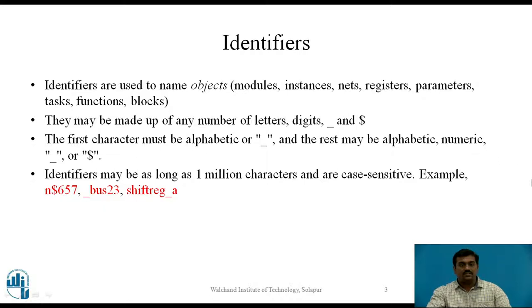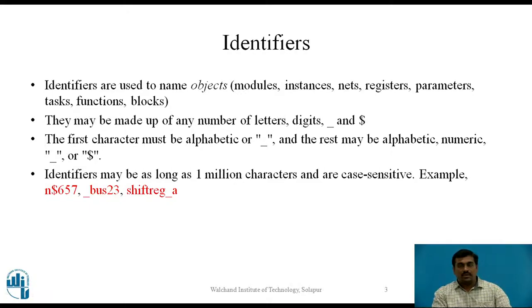However, there are certain rules. The first character of an identifier must be alphabetic or you can also use the underscore character, and the rest may be a combination of alphabetic, numeric, underscore, or dollar. An identifier cannot start with a digit. An identifier may be as long as 1 million characters, and all identifiers are case sensitive. Examples include n$657, _bus23, and shift_rate_8.